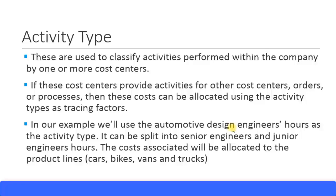We need to put a pricing on that and allocate it to those four product lines. The way to come up with the price is basically the overall expenses in this department - you can look at salary expenses only, but it's easier to look at the overall expense of the department and divide by the number of hours contributed. That gives you a rough idea of price per hour. In this department, we'll have senior engineers at a separate higher pricing, and junior engineers at a slightly lower pricing.